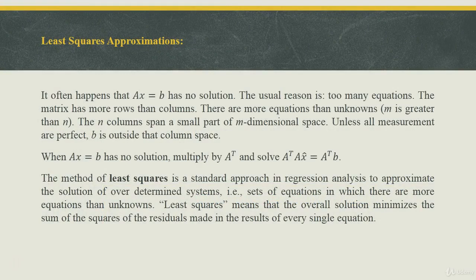It often happens that Ax = b has no solution. The usual reason is too many equations — the matrix has more rows than columns. So there are more equations than unknowns, or we can say m is greater than n. The n columns span a small part of m-dimensional space, and unless all the measurements are perfect, b is outside that column space.